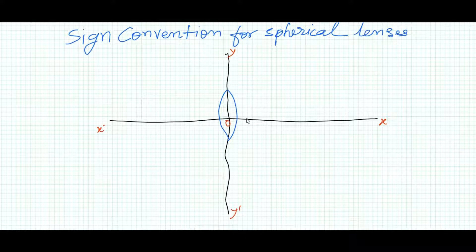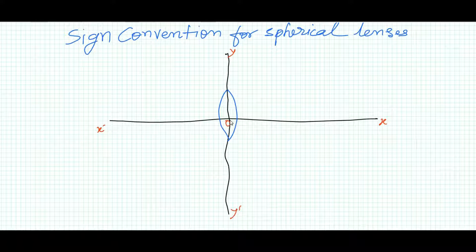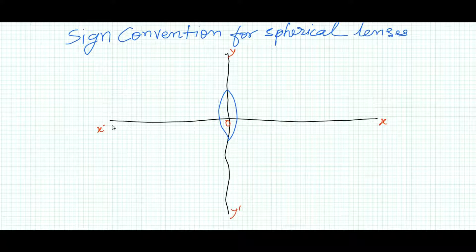For understanding sign convention, all distances will be measured from the optical center O. If you go towards the positive x-axis from the origin, that is a positive value. Going towards the negative x-axis gives negative values. Similarly, distances measured toward the positive y-axis are positive, and toward the negative y-axis are negative.